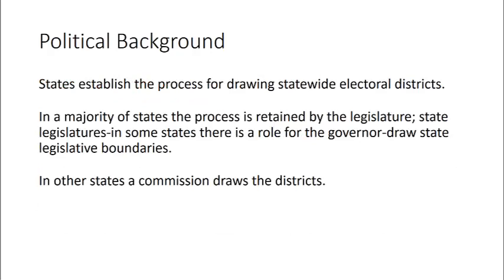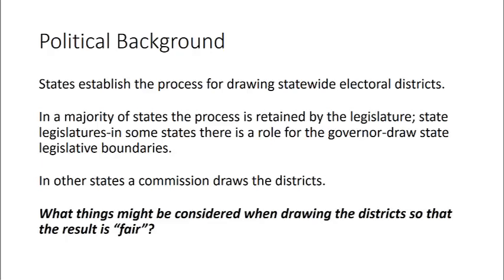States establish the process for drawing statewide electoral districts, and in a majority of states the process is retained by the legislature. State legislatures — and in some cases the governor has a role — draw state legislative boundaries, while in other states a commission draws the districts. So what are some things that might be considered when drawing these districts so that the end result is fair?